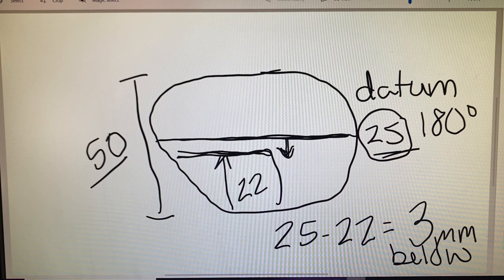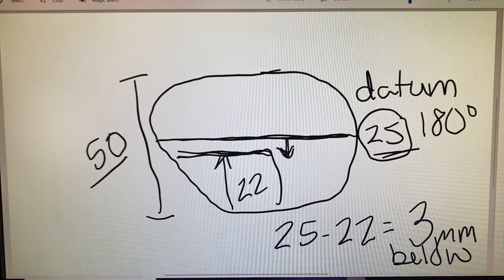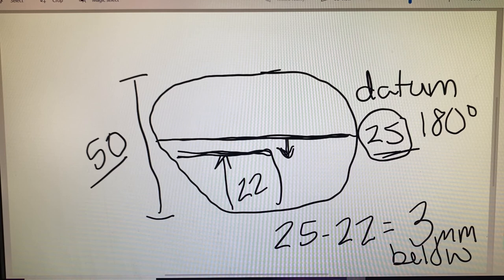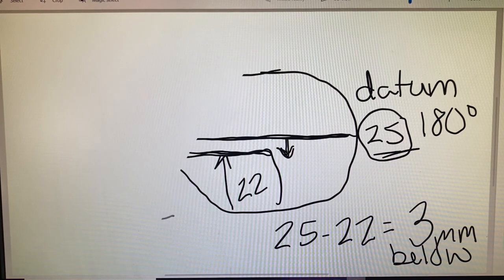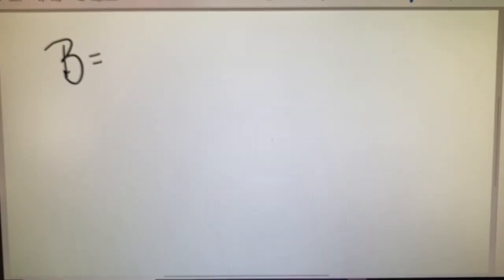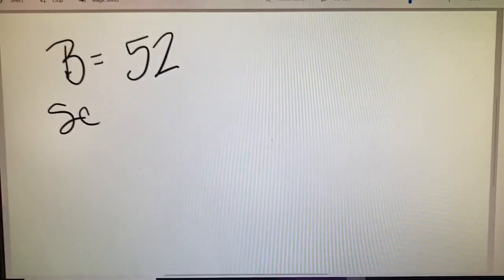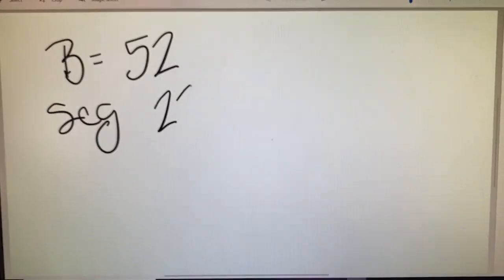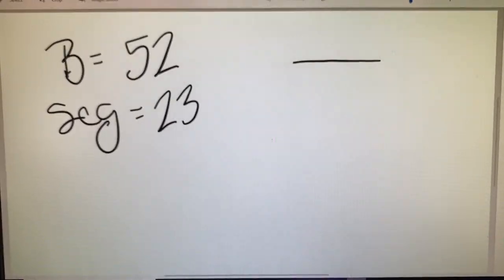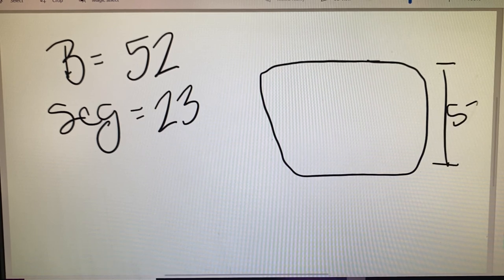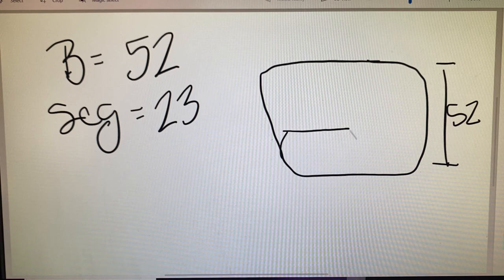Let's go ahead and take a look at page 17, our practice examples for vertical decentration and tackle question number 9. In question number 9, they've told us that the b-measurement of our intended frame is 52 millimeters. The seg height for our patient is at 23 millimeters. So we need to lay this all out here. We've got a b of 52. We have a seg height of 23.